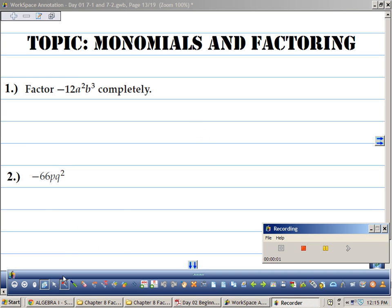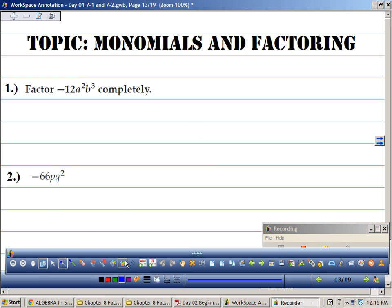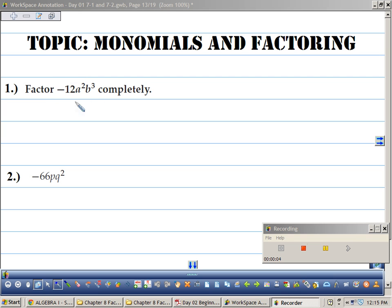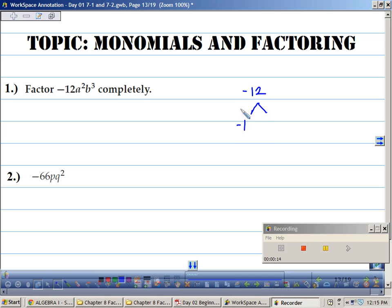Okay, so let's start with number one. I like to factor 12 on the side. So when we have a negative, I think it's important to first represent that negative. So the first two factors of negative 12 are negative 1 and 12. Somebody give me two more factors of 12.